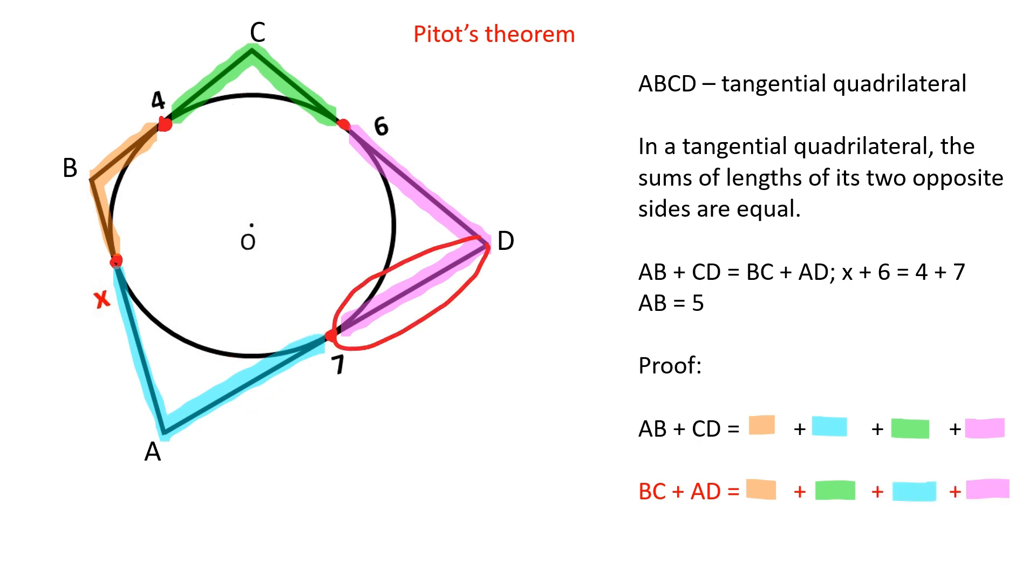Therefore, we can see that the sum of AB and CD is equal to the sum of BC and AD, which proves our original statement.